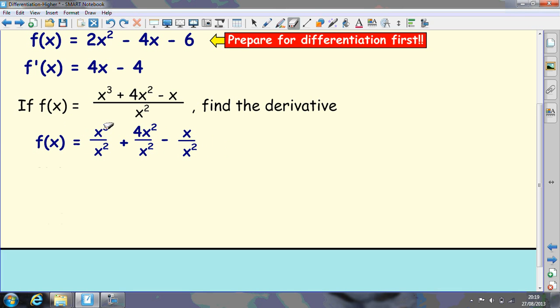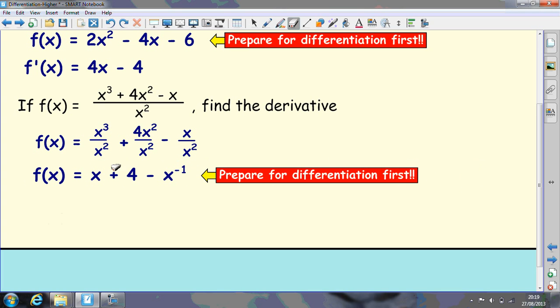Then we can do this work from Intermediate 2 or National 5. When you divide indices, you subtract them. So that becomes x. Notice I haven't differentiated yet, I'm just setting up for differentiation. The x² will cancel, that becomes 4. And this is really 1 take away 2, that's -1. So we've prepared it for differentiation.